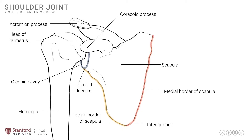The design of the ball and socket joint — the glenohumeral joint or shoulder joint proper — is for mobility. The shoulder joint has a very great range of movement, but it is inherently unstable because it is designed for mobility rather than stability.